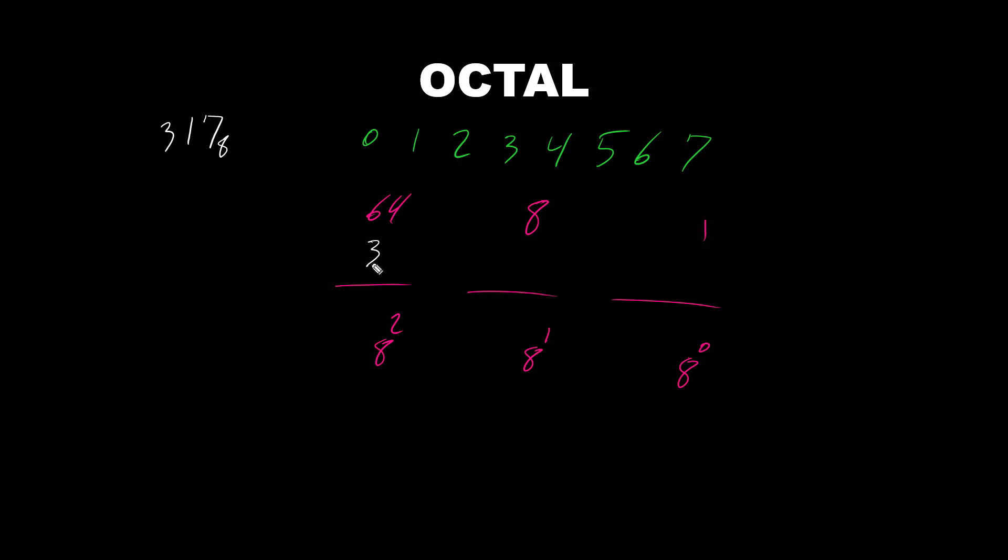Let's put in the place values 3, 1, 7. What this means, 3 times 64 plus 1 times 8 plus 7 times 1.